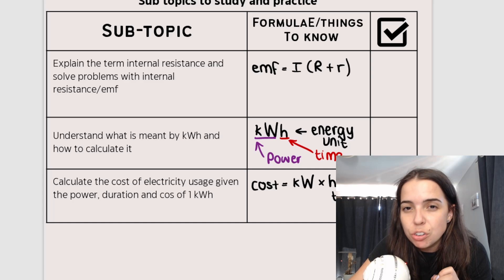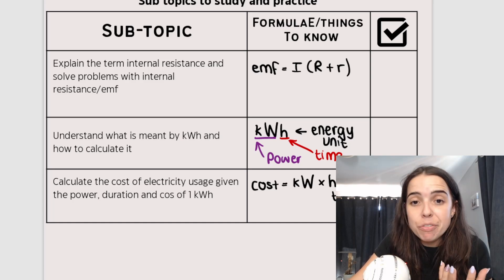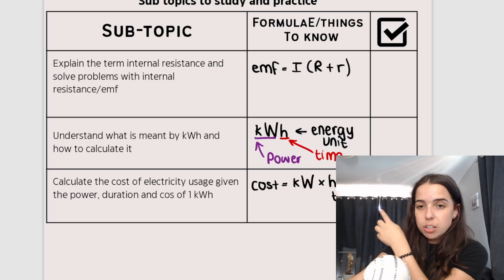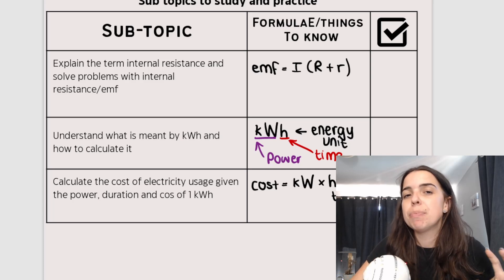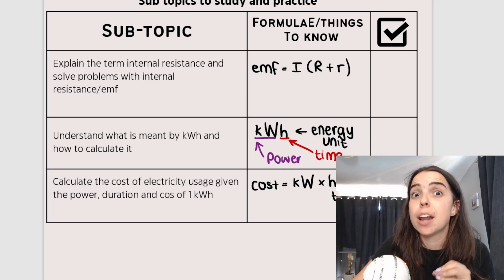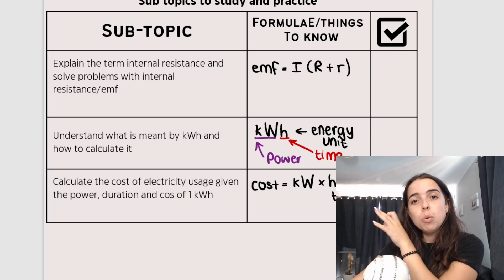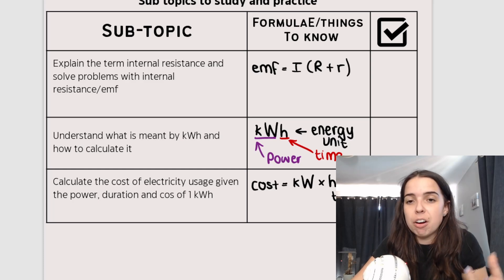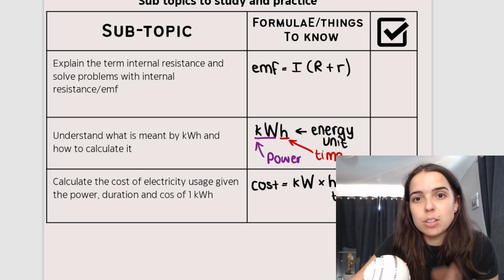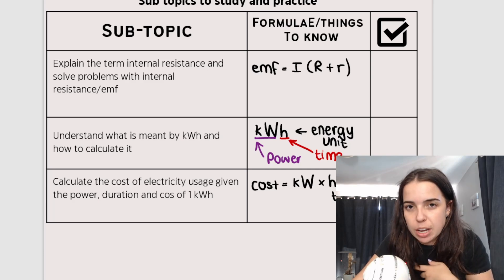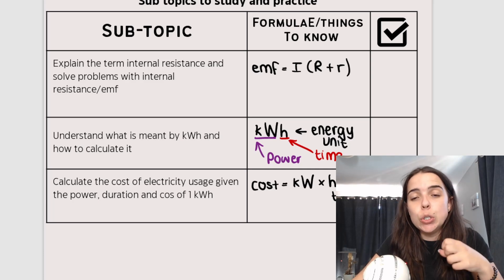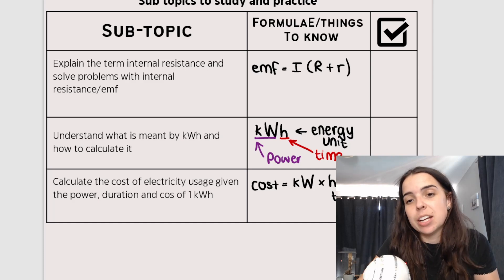So you work with internal resistance. You can see in the formula at the top, there's a little baby R, internal resistance. We work with EMF. And you also need to calculate the cost of electricity, which is actually something that a lot of you already do in grade 9 natural sciences. So not difficult, but you use kilowatt hours and the tariff or the cost in order to work that out. So the biggest change I would say in grade 11 is including internal resistance in the calculations.